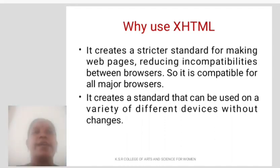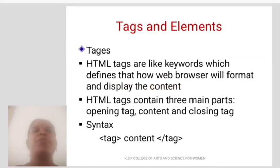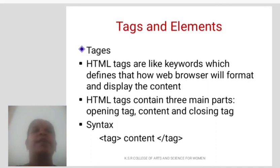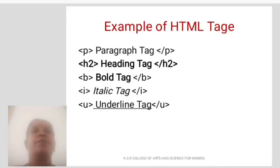Tags and Elements: HTML tags are like keywords which define how a web browser will format and display the content. XHTML tags contain three main parts: opening tag, content, and closing tag. Syntax: tag, content, closing tag. Examples of HTML tags include paragraph tag, heading tag, bold tag, italic tag, and underline tag.